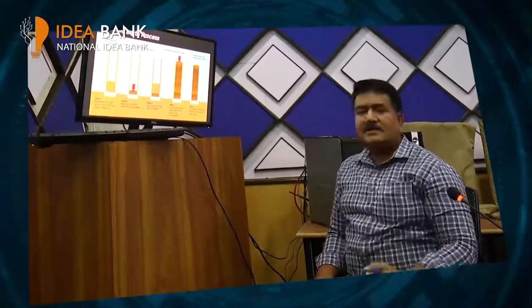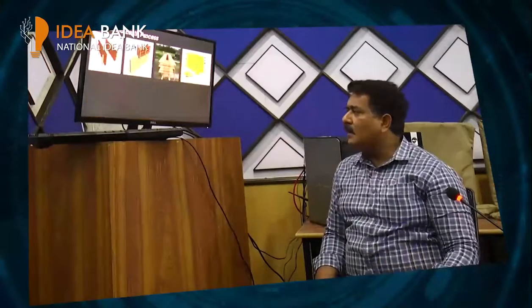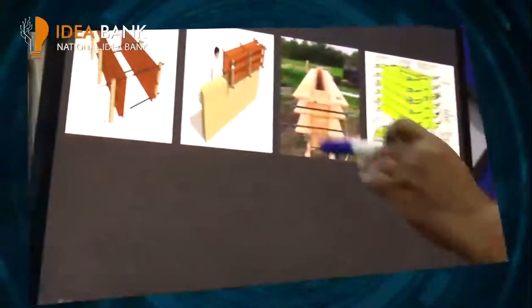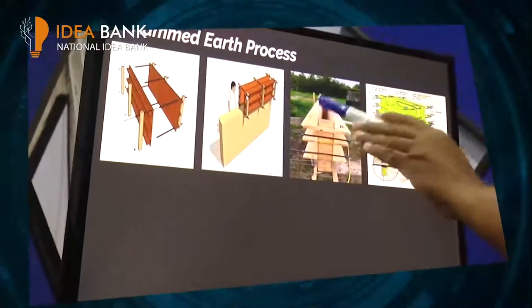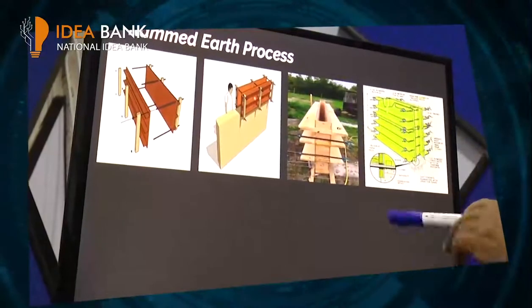یہ اس طرح سے ایک بہت قابل کم لاغت کا طریقہ کار ہے۔ جب ایک مرتبہ فارم ورک کھول لیتے ہیں اور دیوار مکمل ہو جاتی ہے تو اسی فارم ورک کو دوبارہ اوپر رکھ کر مٹی ڈال کر یہی عمل دہراتے ہیں۔